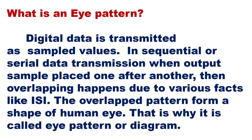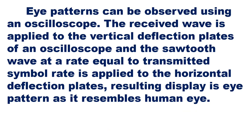The eye pattern provides a great deal of information about the performance of the system by studying the received waveform. Eye patterns are observed using an oscilloscope. The received wave is applied to the vertical deflection plates of the oscilloscope, and a sawtooth wave at a rate equal to the symbol rate — that is 1/Tb, where Tb is the bit time period — is applied to the horizontal plates. The resulting display gives the eye pattern.